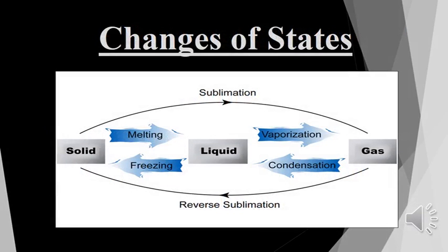Look at this diagram. It explains all the processes of changes in states of matter. You can see clearly that when a solid changes into a liquid, the process is called melting. When a solid changes directly into a gas, the process is called sublimation. The change of a liquid into a gas is called vaporization or evaporation. The change from gas to liquid is condensation, while liquid to solid is called freezing. These are all the processes which change the states of matter. Now we will discuss all these changes in detail with the help of word equations and examples.